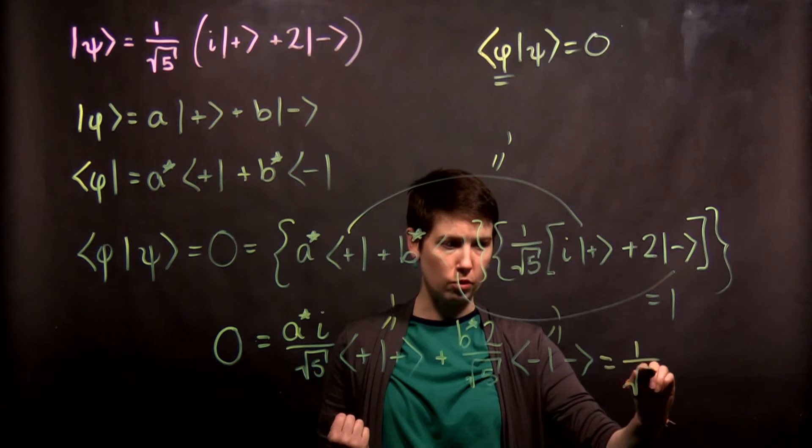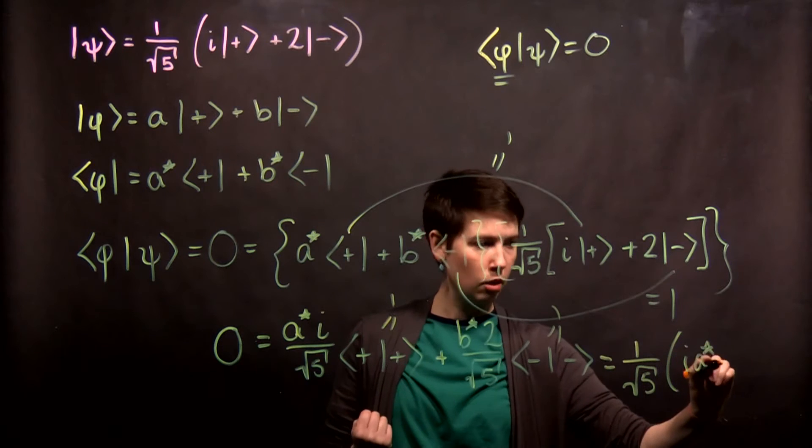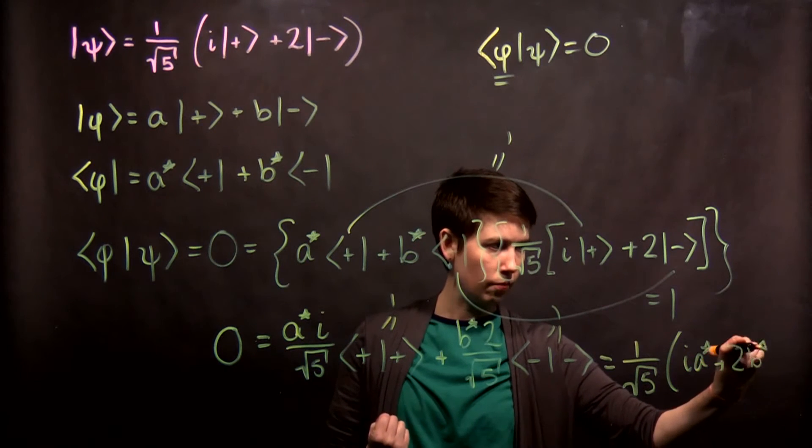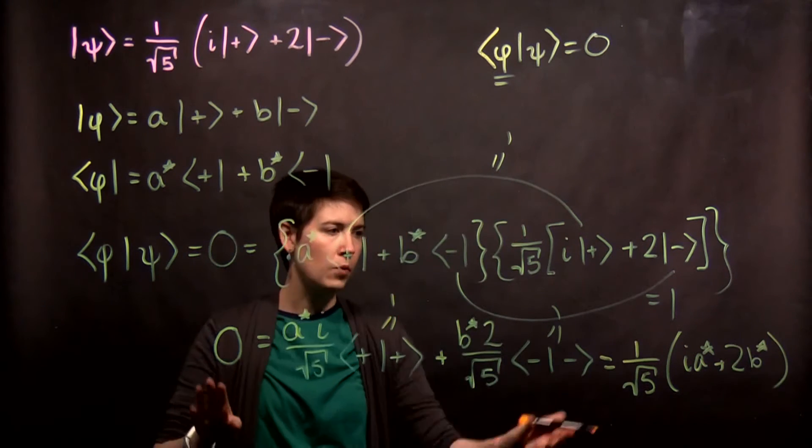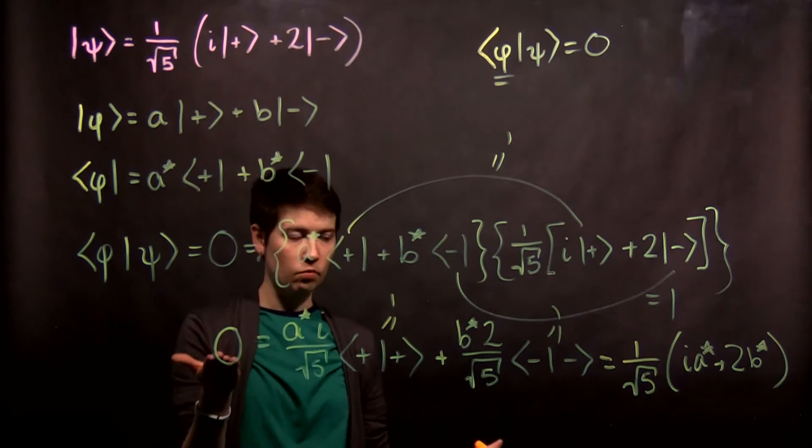I'll pull out this 1 over square root of 5, and then we have i a star plus 2b star. Here's what's interesting. I can multiply both sides by square root of 5. On the left, I have 0.